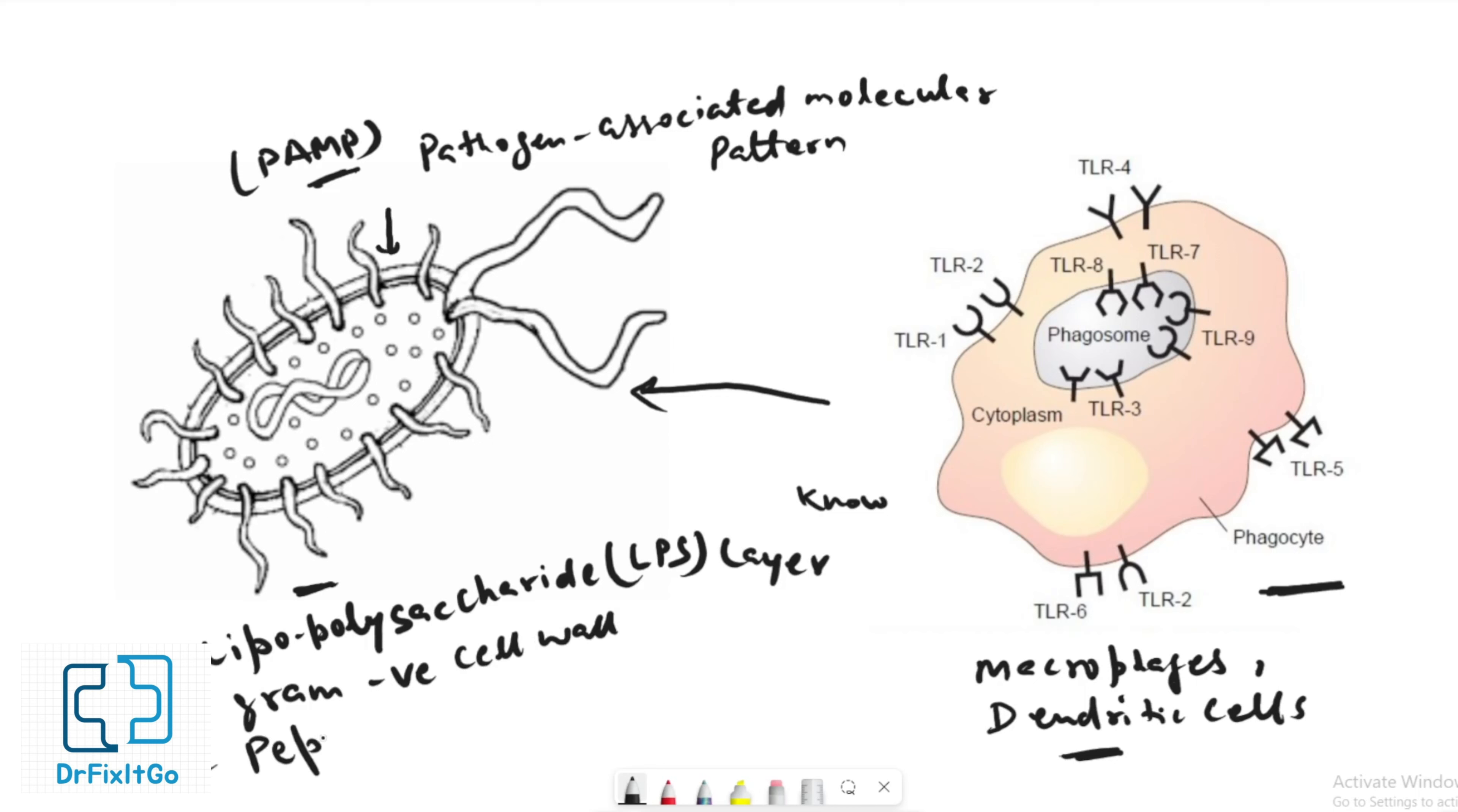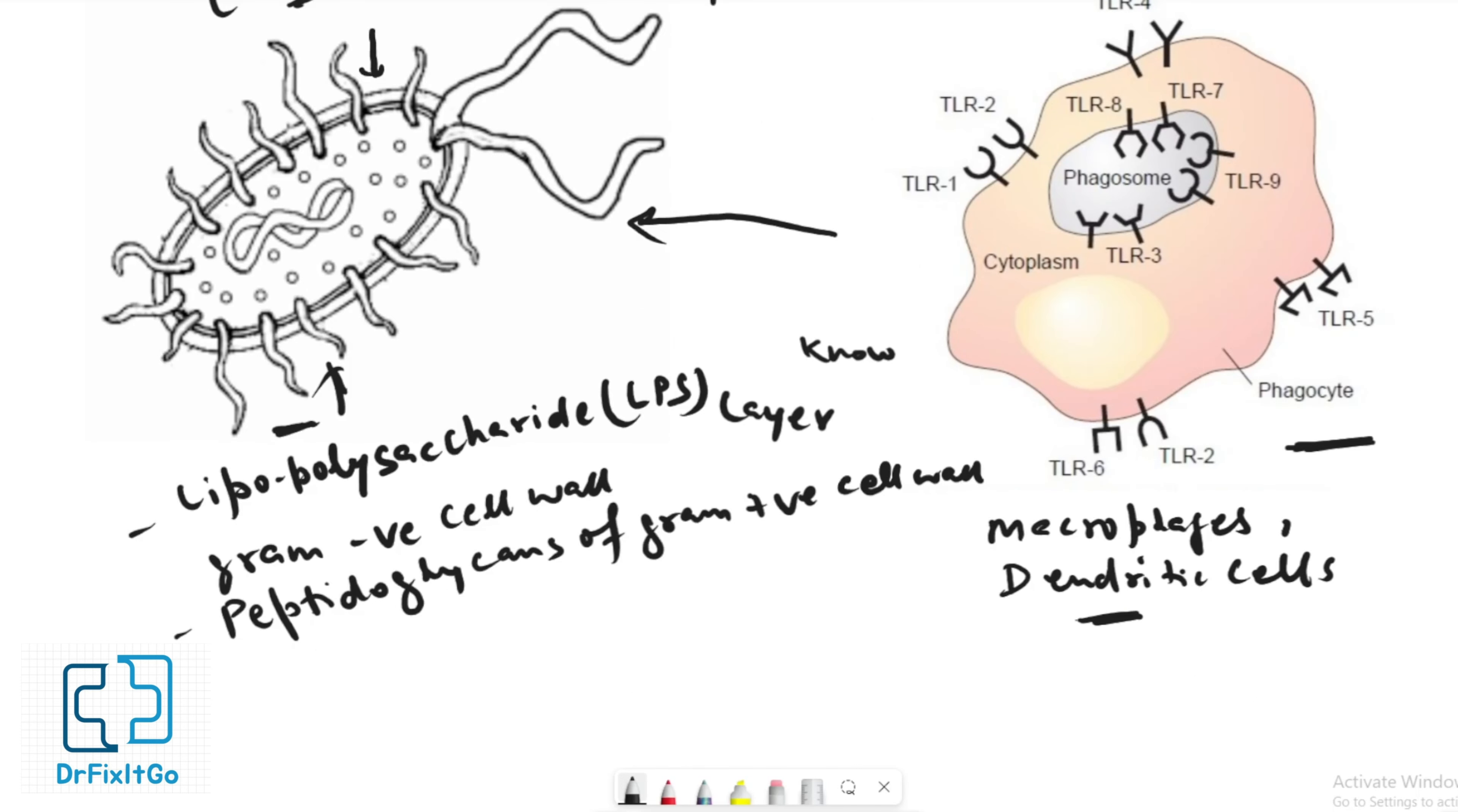Peptidoglycan of gram-positive cell walls, fungal cell walls, and bacterial and viral nucleic acids. Currently, microbiologists believe innate immunity recognizes at least a thousand different PAMPs.